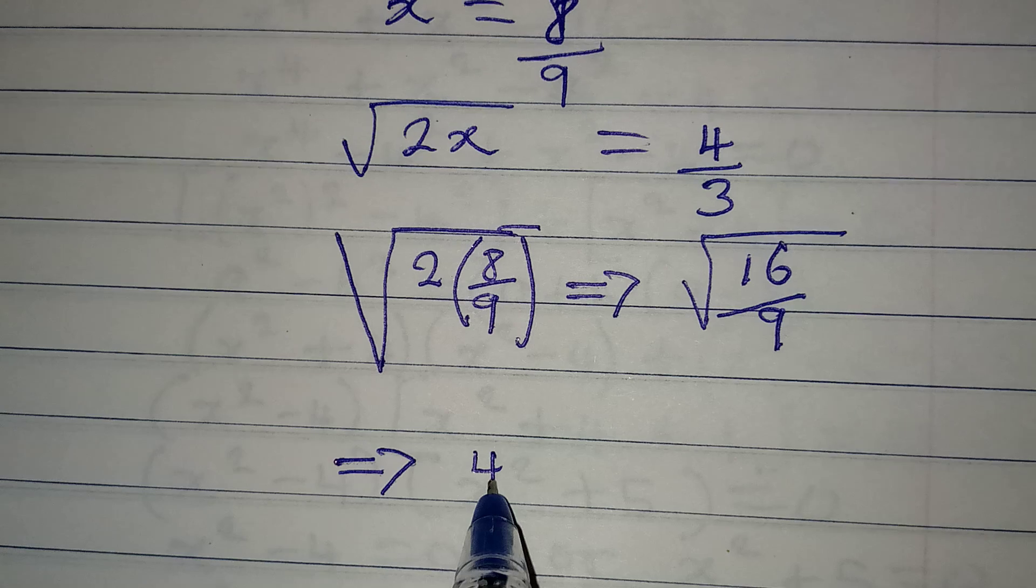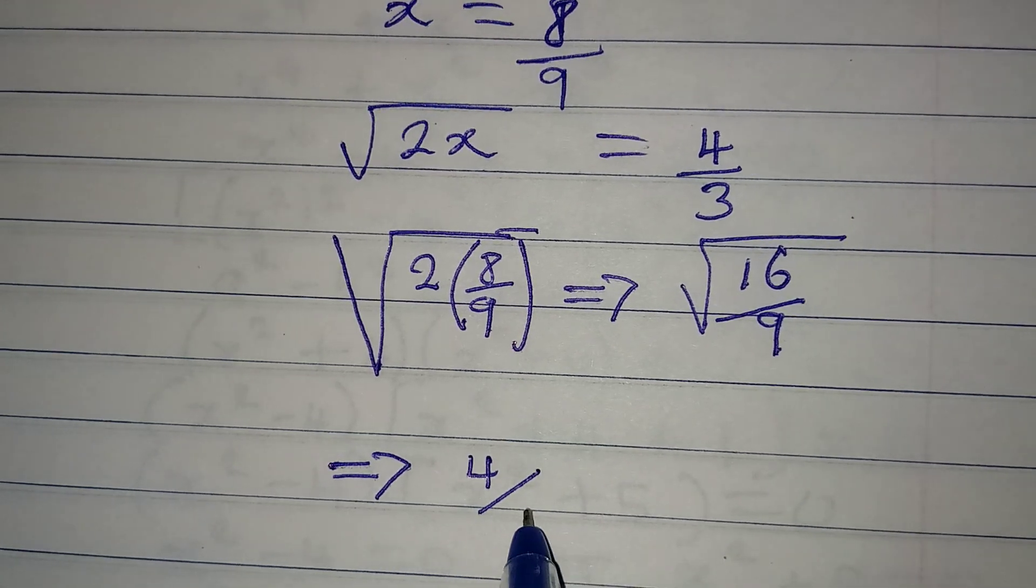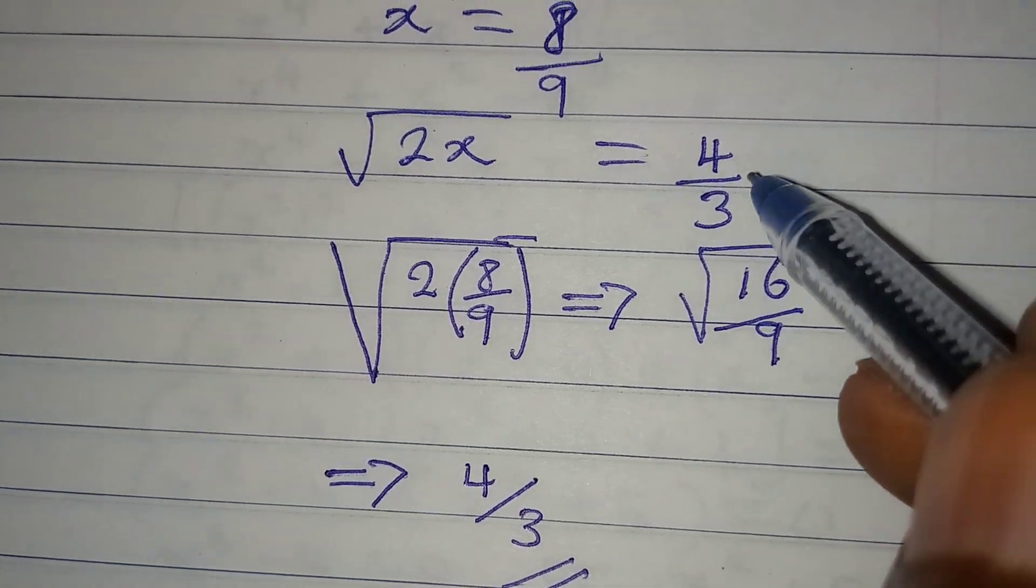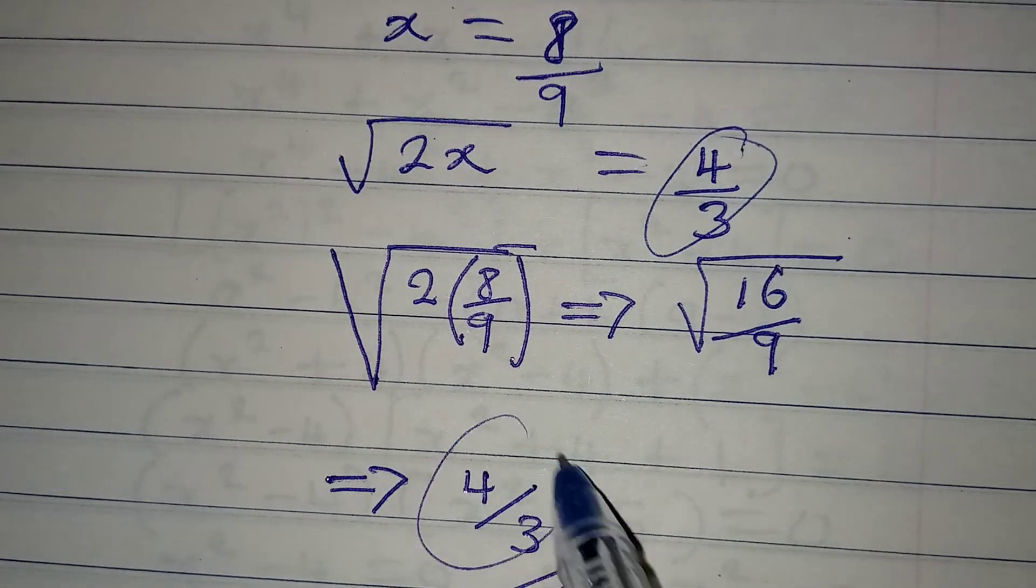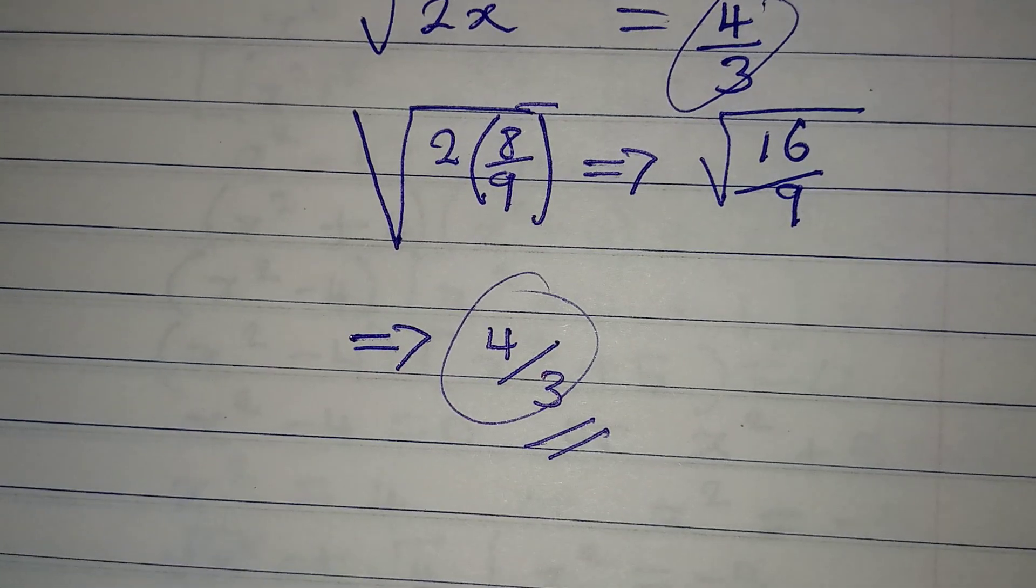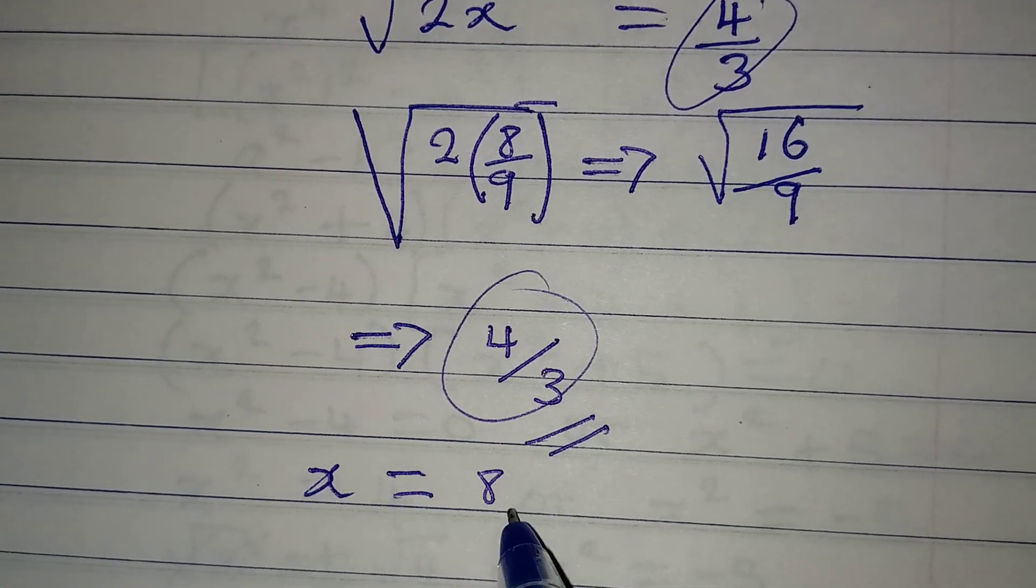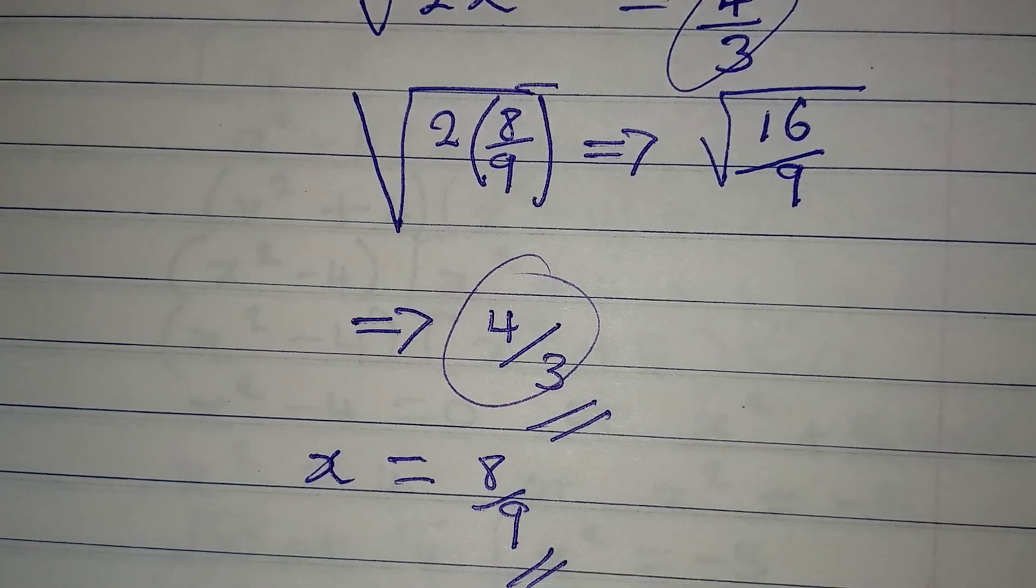So this way we are correct because what we have on the right is equal to what we are having here. So our x is truly equal to 8 over 9. Thank you for watching.